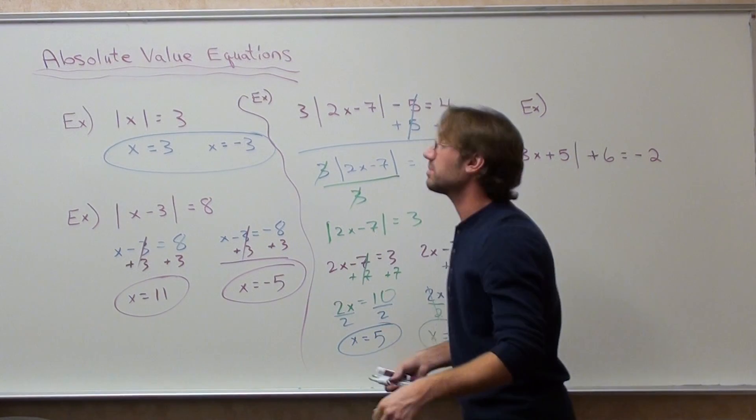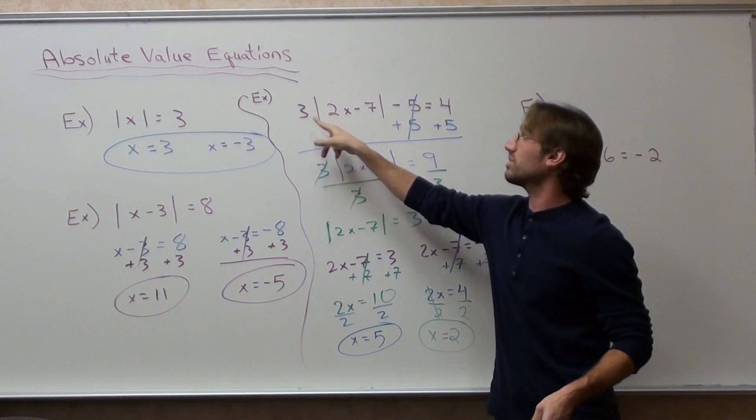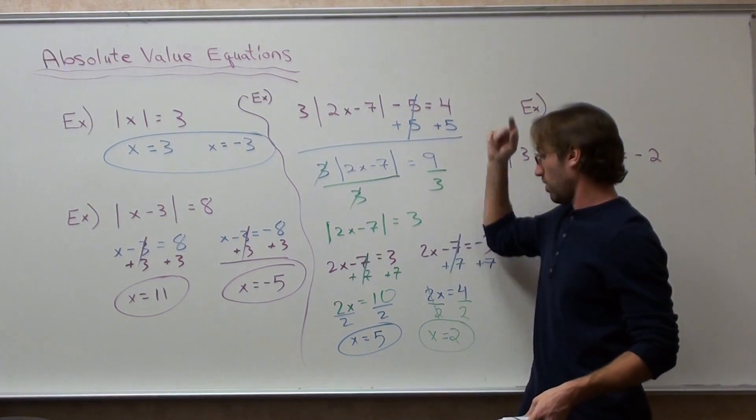If you don't believe me, go ahead and substitute that in. In fact, I will do it right now. Two times five is ten. Minus seven is three. Three times three is nine. Nine minus five is four.